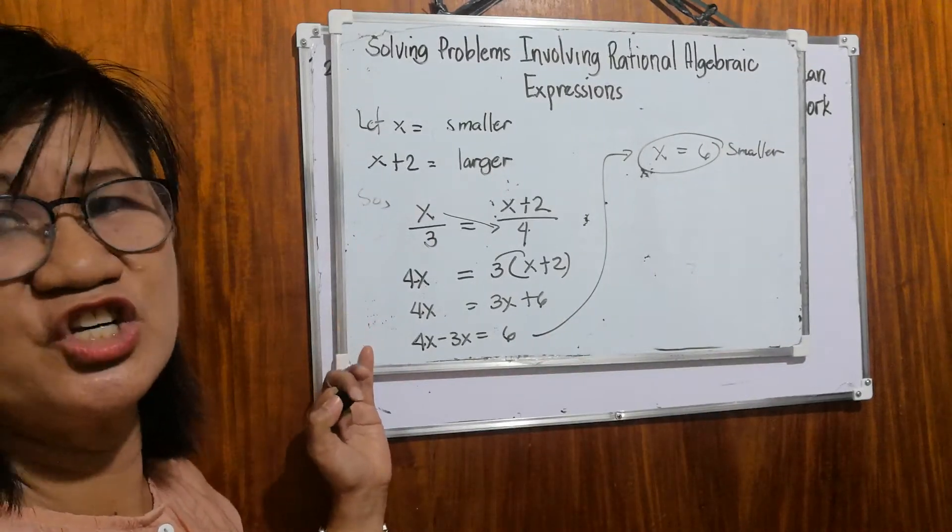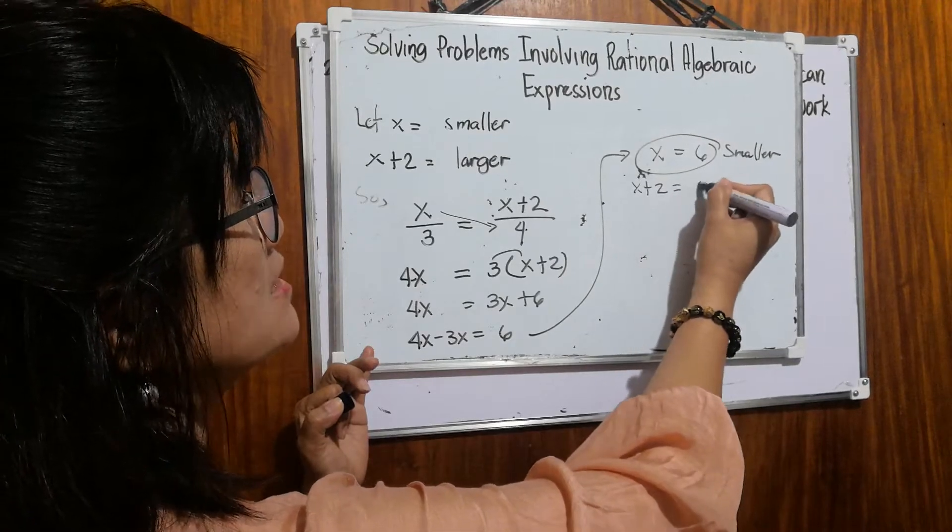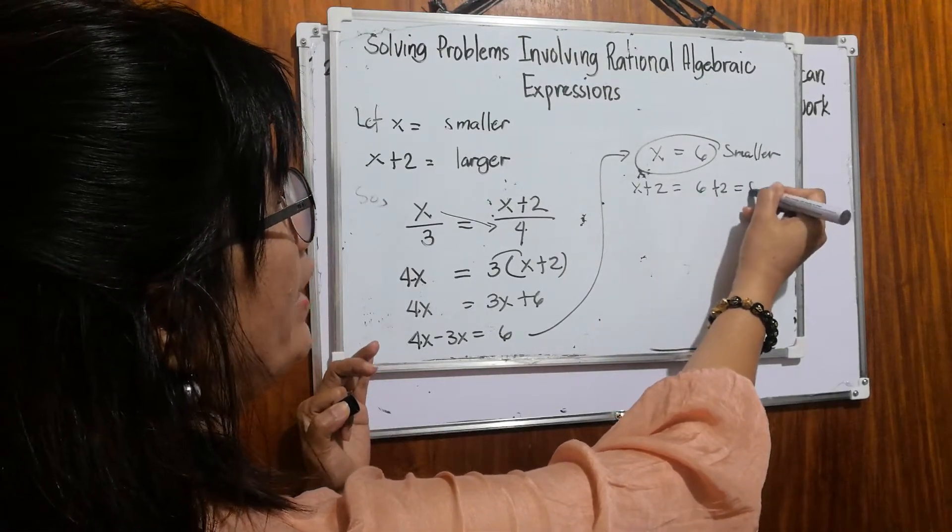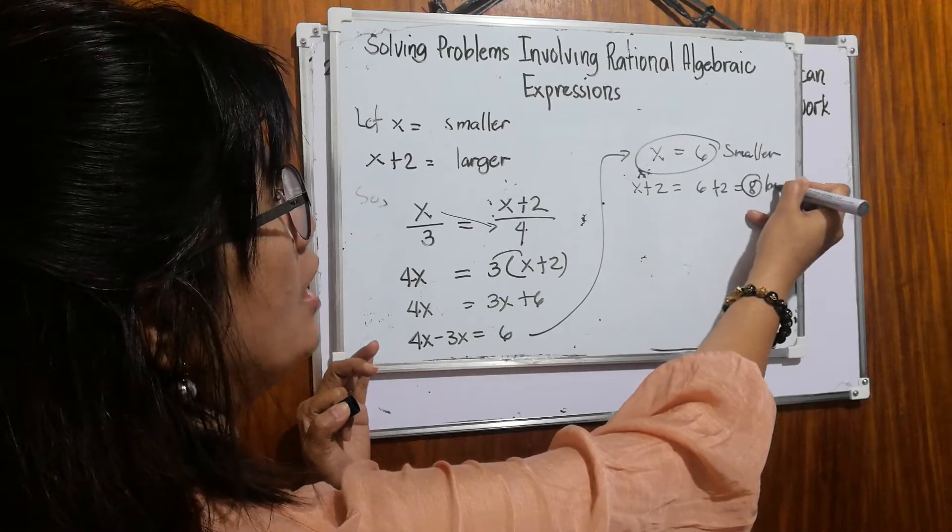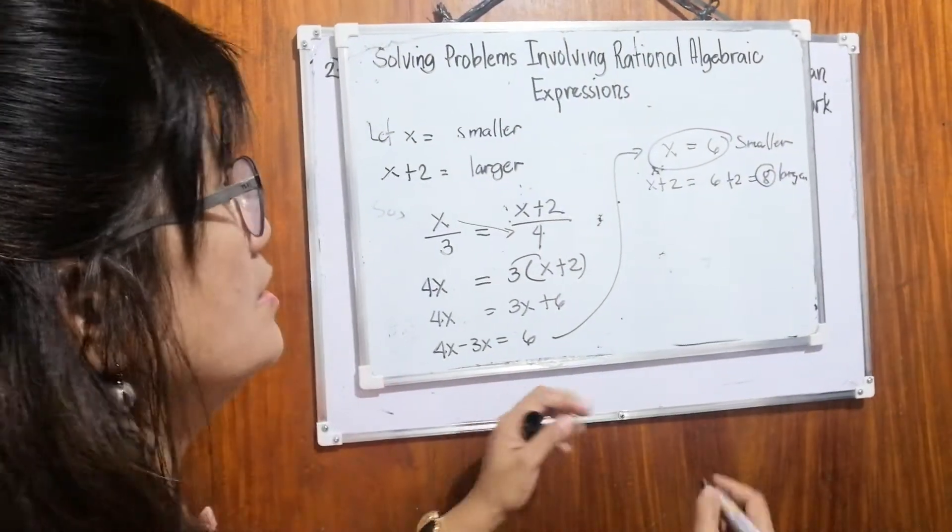How about the larger? So x plus two will become six plus two. That is equal to eight. Eight is our larger even integer. So let's check.